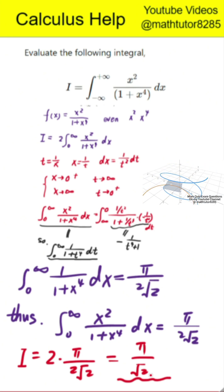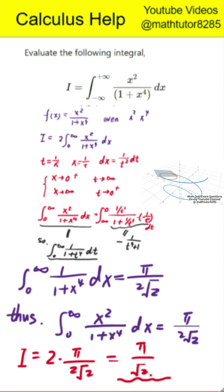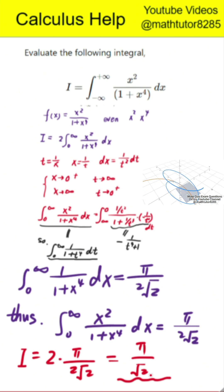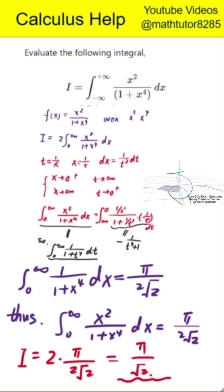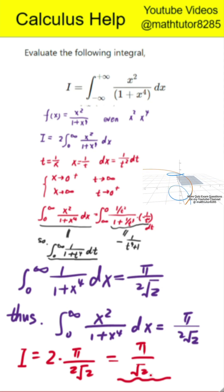Key idea: always check whether the function is even or odd first, because that can cut the work in half. Common pitfall: some students think the integral diverges because of the numerator x squared, but the denominator grows faster as x to the fourth, so it converges. When you see rational functions with numerator and denominator involving powers of x, try the substitution x equals 1 over t — this often uncovers hidden symmetry.